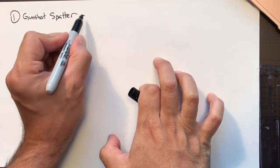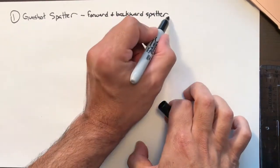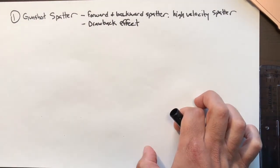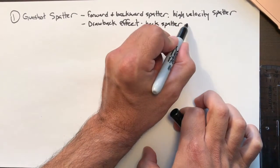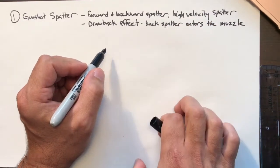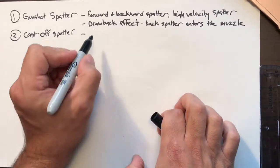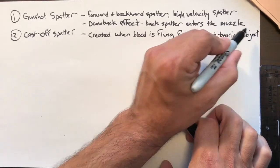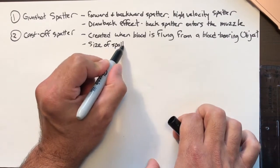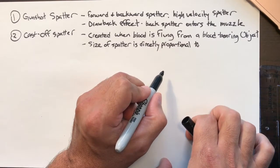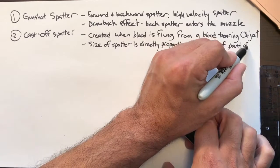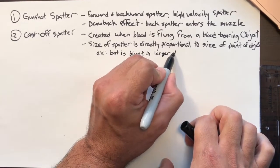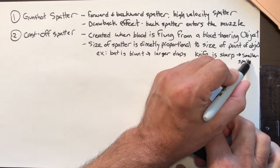There are 10 to 12 different types of spatter patterns. Gunshot spatter produces forward and backward spatter (high velocity). The drawback effect occurs when the muzzle is close enough to the victim that blood droplets are found inside the gun barrel — this tells you how close the gun was. Cast-off is created when blood is flung from a blood-bearing object like a knife or bat. The size of cast-off spatter is proportional to the bluntness of the weapon — a blunt bat makes larger drops; a sharp knife makes smaller ones.